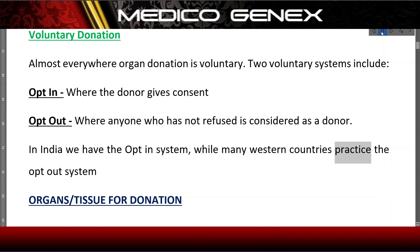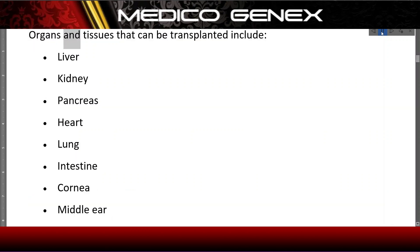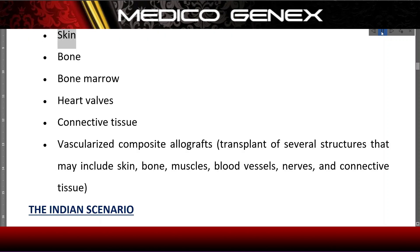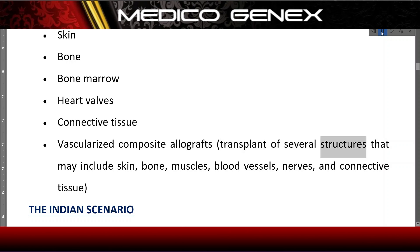Many western countries practice the opt-out system. Organs and tissues that can be transplanted include liver, kidney, pancreas, heart, lung, intestine, cornea, middle ear, skin, bone, bone marrow, heart valves, connective tissue, and vascularized composite allografts — transplants of several structures that may include skin, bone, muscles, blood vessels, nerves, and connective tissue.